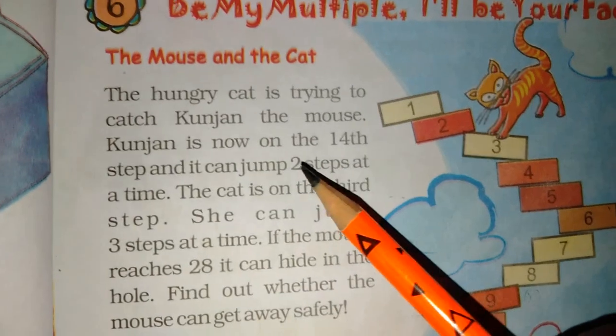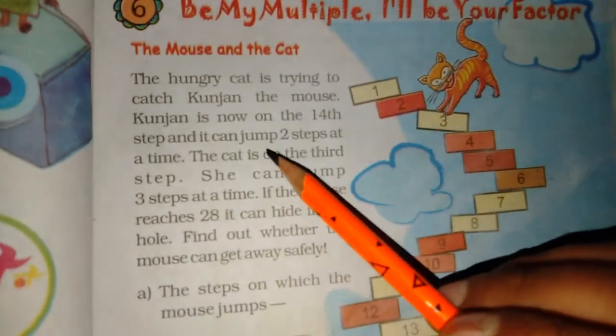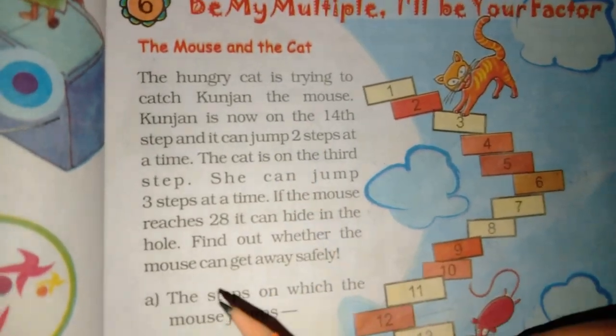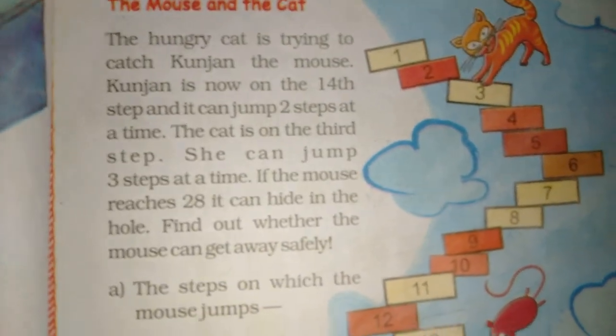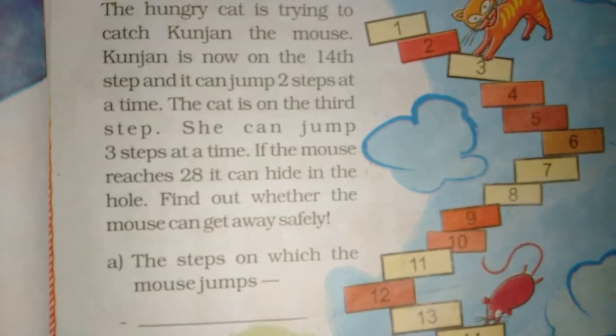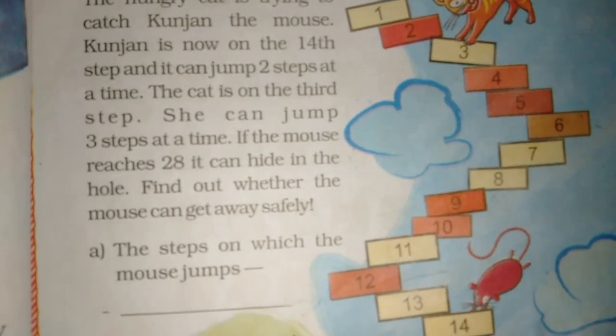The hungry cat is trying to catch Kunjan, the mouse. Kunjan is now on the 14th step and it can jump two steps at a time. The cat is on the third step. She can jump three steps at a time. If the mouse reaches 28, it can hide in the hole.